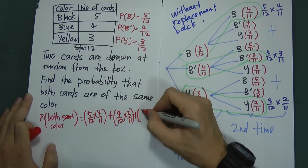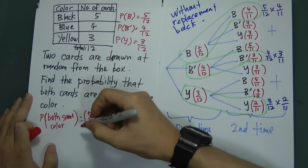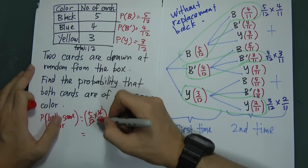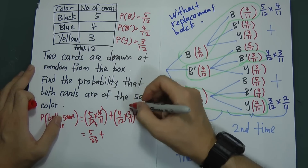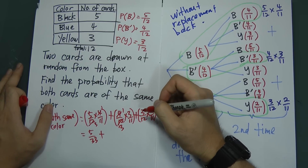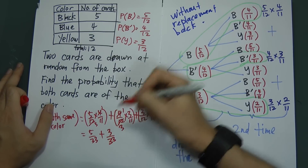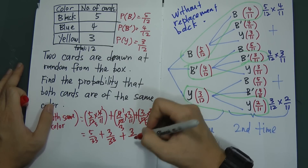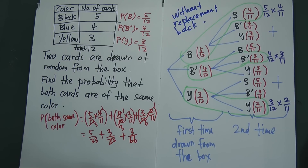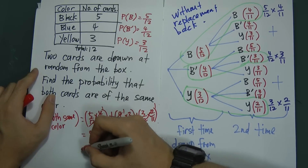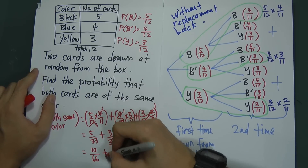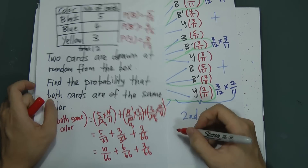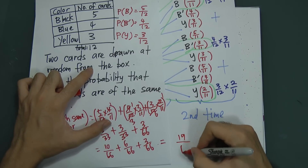Summing all of them: 5/12 × 4/11 = 20/132 = 10/66; 4/12 × 3/11 = 12/132 = 6/66; 3/12 × 2/11 = 6/132 = 3/66. Adding them together: 10/66 + 6/66 + 3/66 = 19/66. So the final answer is 19 over 66.